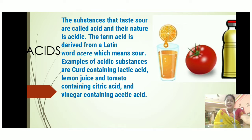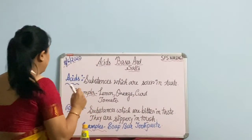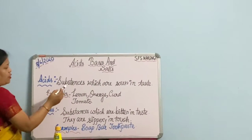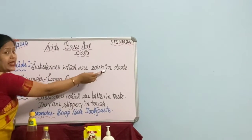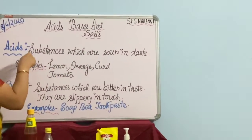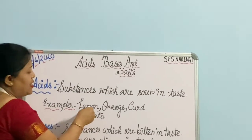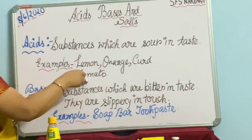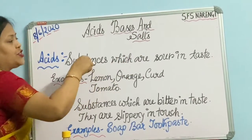Acids. The substances that taste sour are called acids and their nature is acidic. The term acid is derived from a Latin word, 'acer', which means sour. Examples of acidic substances are: curd containing lactic acid, lemon juice and tomato containing citric acid, and vinegar containing acetic acid. Examples include lemon, orange, curd, and tomato.